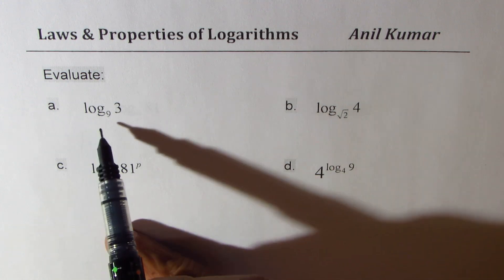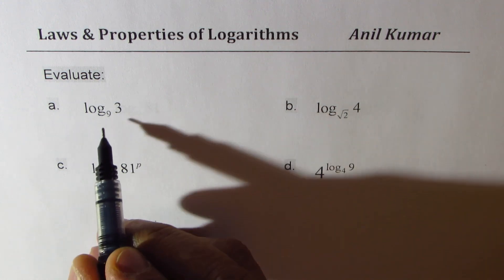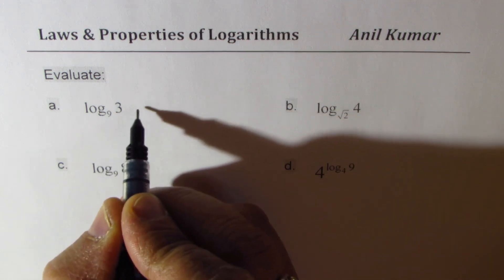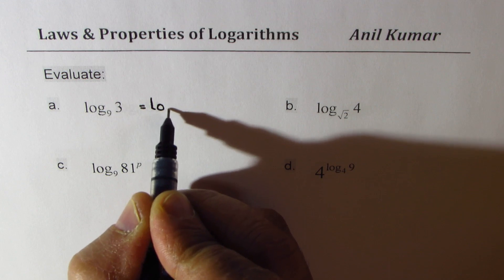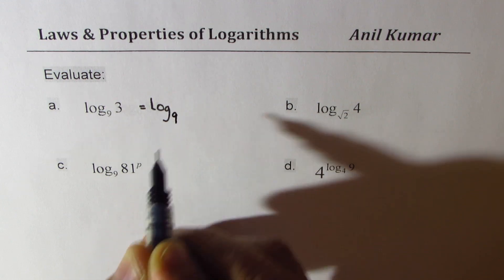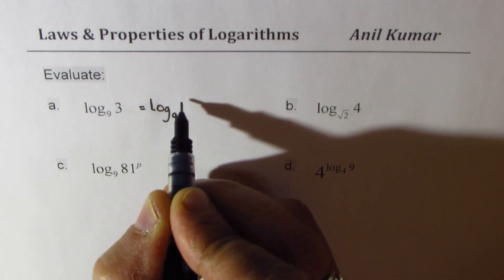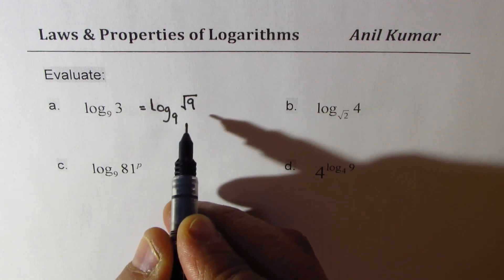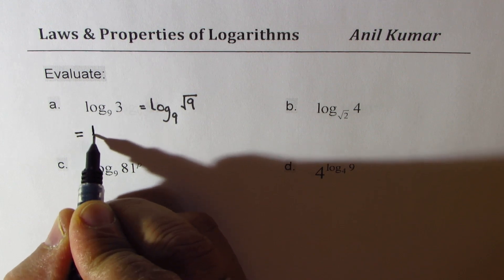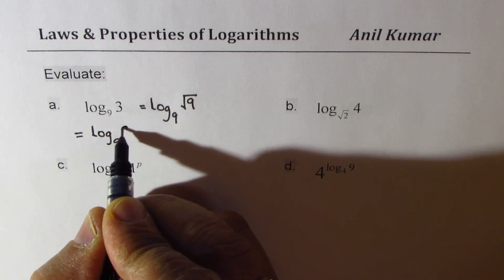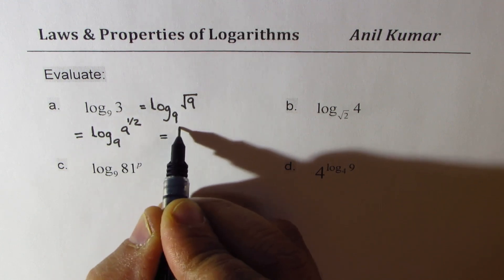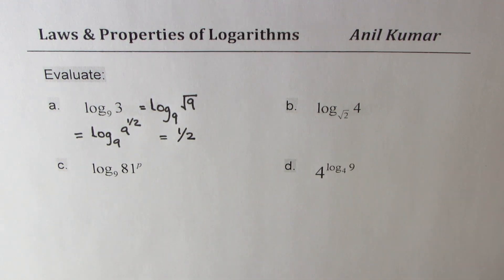Log to the base 9 of 3. The idea is to write 3 in terms of 9. If you can do that, the solution is very easy. 3 can be written as the square root of 9. So we get log to the base 9 of 9 to the power of half. Using the rules, we know this equals one half. That is how you can easily evaluate without using a calculator.